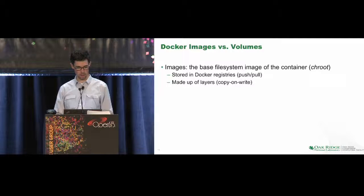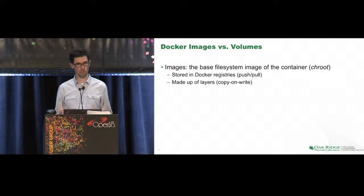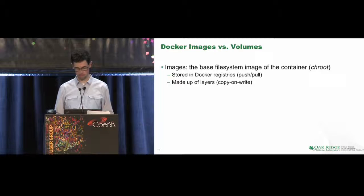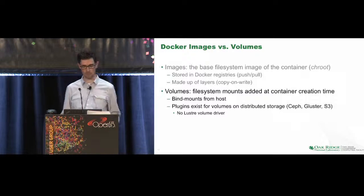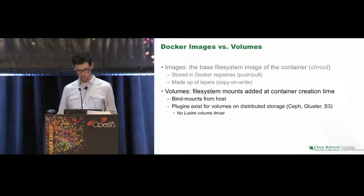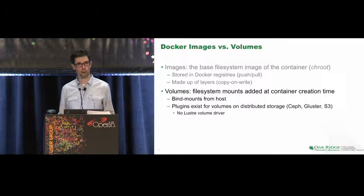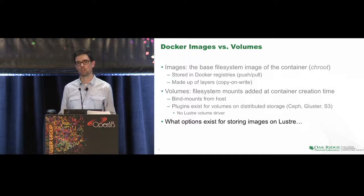The final piece of background: images versus volumes. Images are the base file system of the container — the true environment. They're stored in the Docker registry, accessed via push or pull, and made up of layers in a copy-on-write fashion. Volumes, on the other hand, are files and mounts added after the container starts — this is how you take data from an external store and pull it in. For large data sets, you pull them in through volumes. They can be bind mounts on the host, or there are plugins available for other distributed file stores like Ceph or Gluster. There's not one for Lustre yet, but it would be a relatively straightforward path to implement.